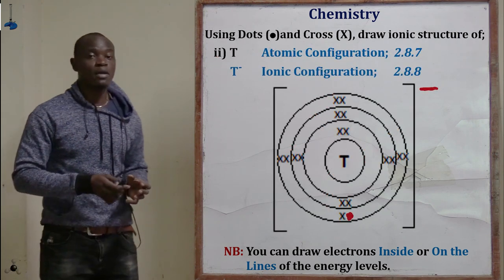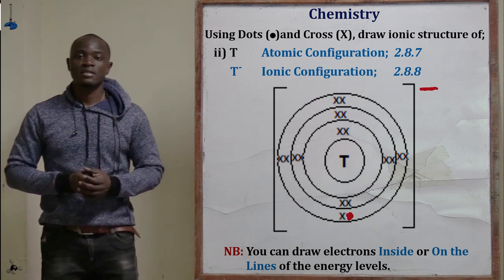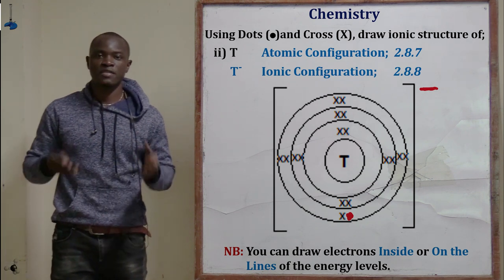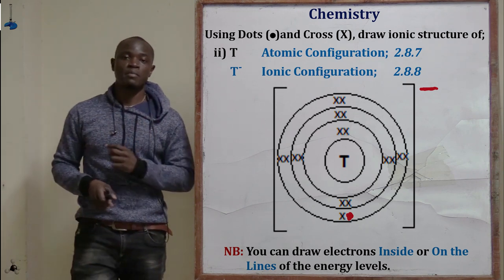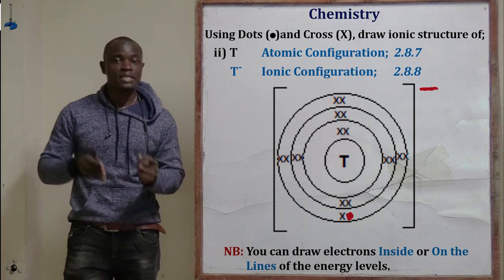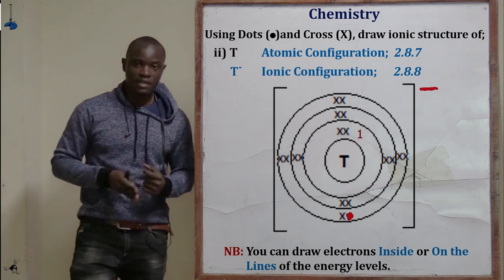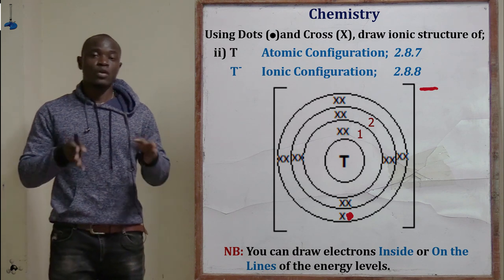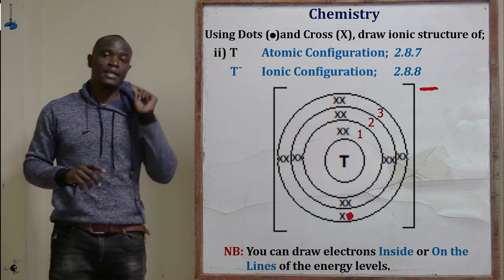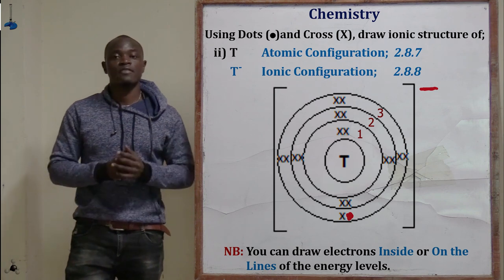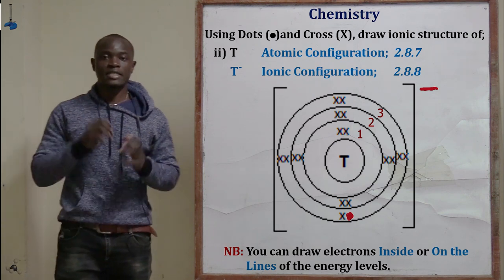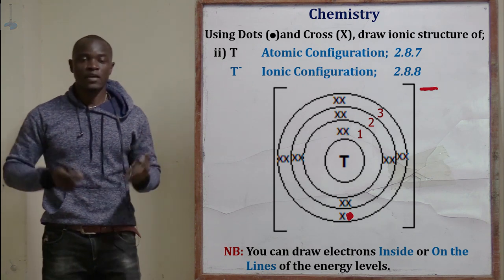For element T, which has atomic number 17, the configuration is 2, 8, 7. Draw the first circle and populate it with 2 electrons, then draw the second energy level and indicate 8 electrons, and finally draw the last energy level and indicate 7 electrons. That is how to draw the dot-and-cross structure of element T.